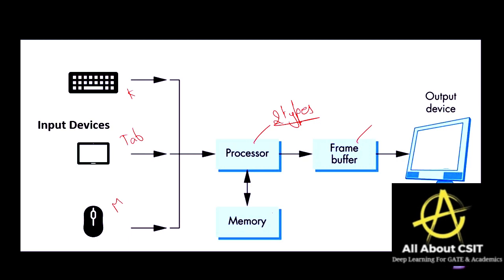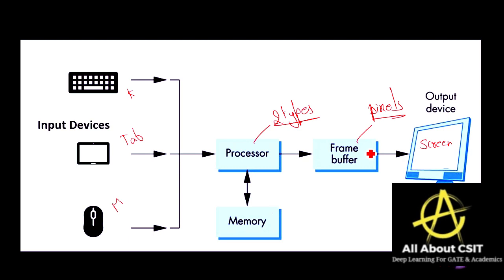The frame buffer stores the pixels of whatever image you want displayed on the screen. Between the processor and the raster or CRT screen, the frame buffer stores pixels so the image can appear with good resolution. The depth of the frame buffer depends upon the number of pixels used in the picture.